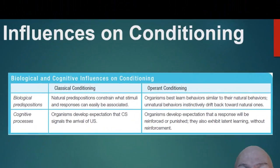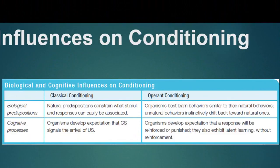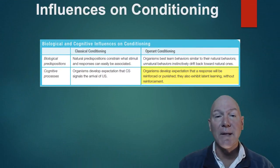The influences on conditioning include biological and cognitive processes in both classical and operant conditioning. In classical conditioning, biological predispositions constrain what stimuli and responses can be easily associated; cognitively, organisms develop an expectation that the conditioned stimulus signals the unconditioned stimulus. In operant conditioning, organisms best learn behaviors similar to their natural behaviors — unnatural behaviors instinctively drift back. Cognitively, they develop expectations that a response will be reinforced or punished, and they exhibit latent learning without immediate reinforcement.